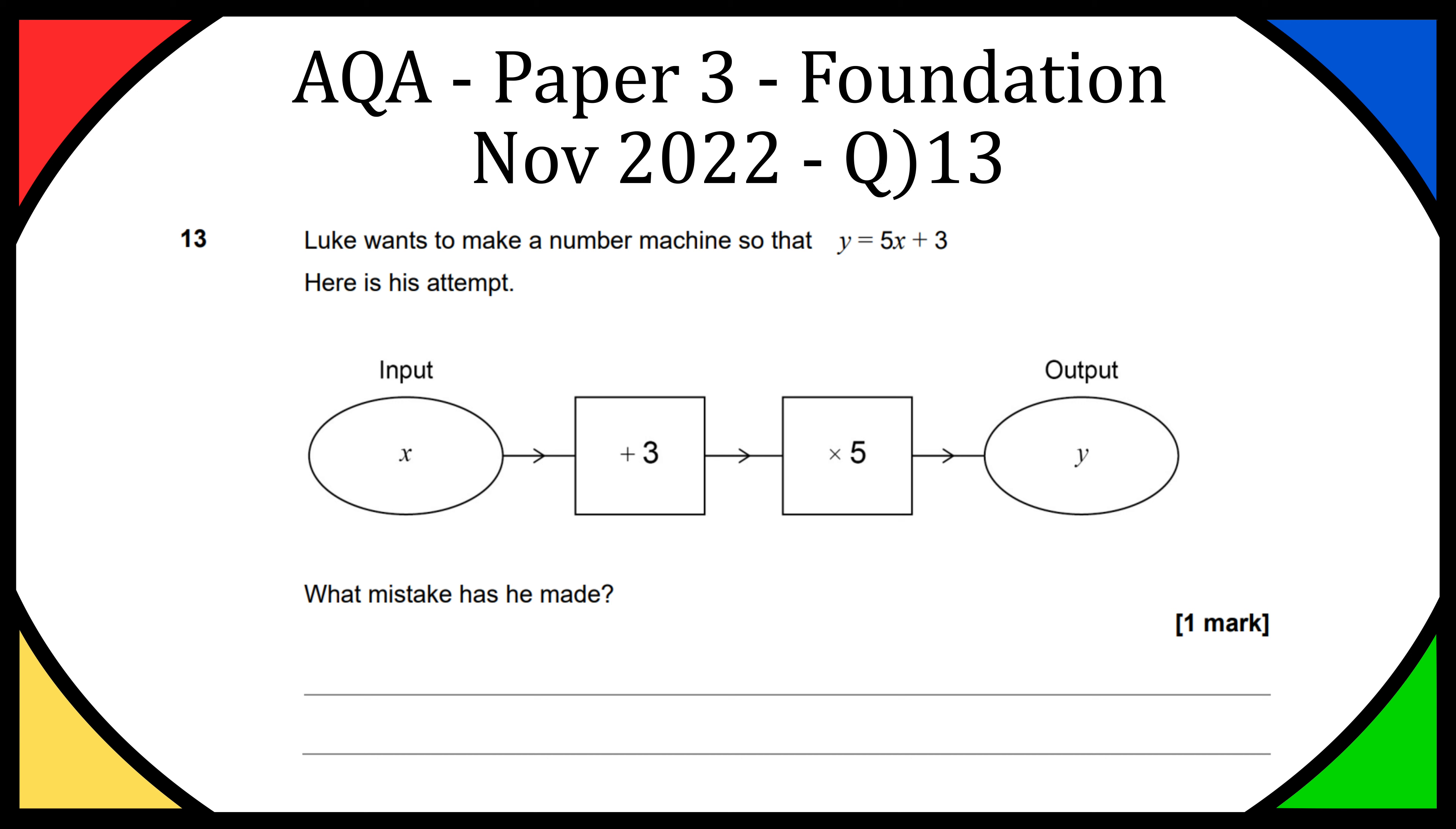Here is his attempt. We've got the input of x, and then he adds 3, times by 5, and puts that output equal to y. Input basically means the number you put in, the original number, and y is going to be the output, the new number after it goes through the machine.